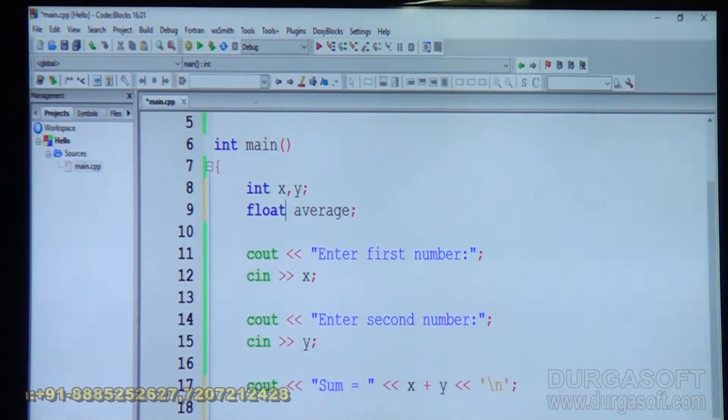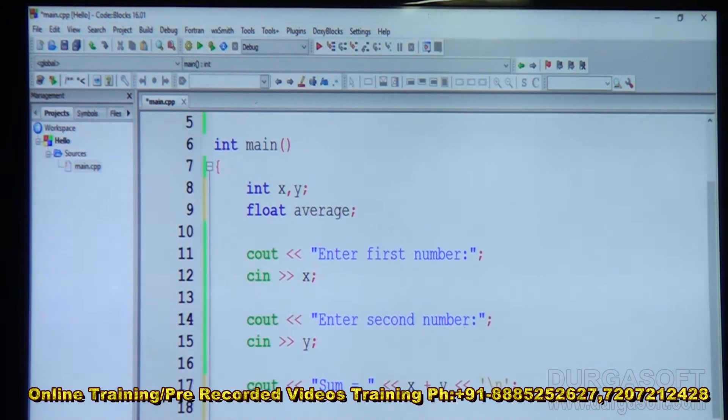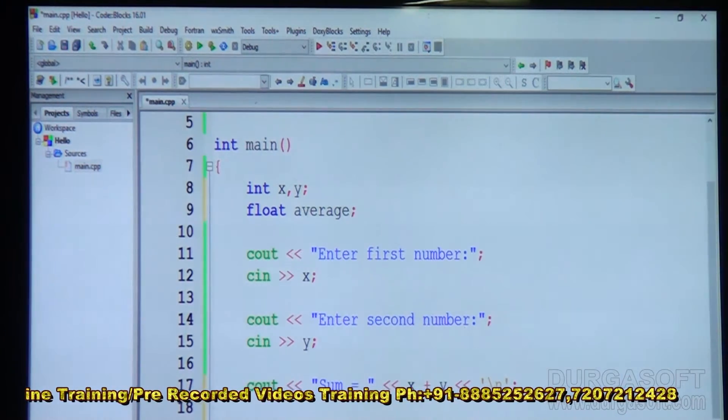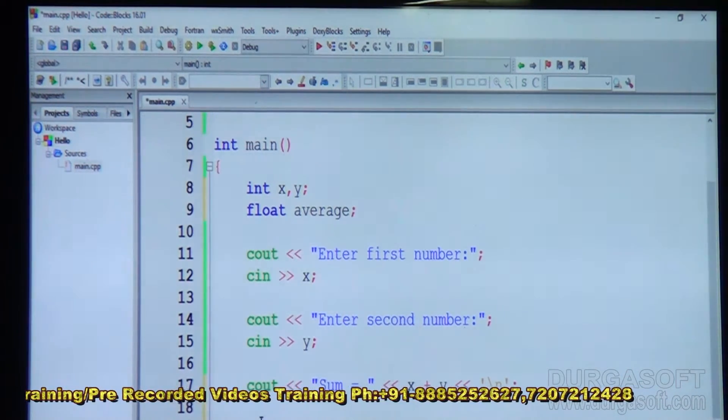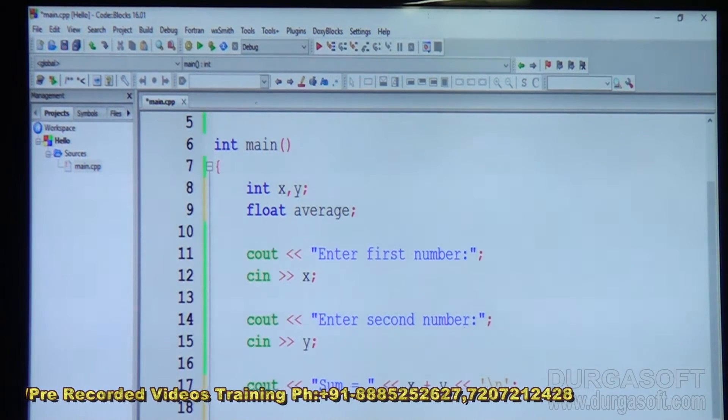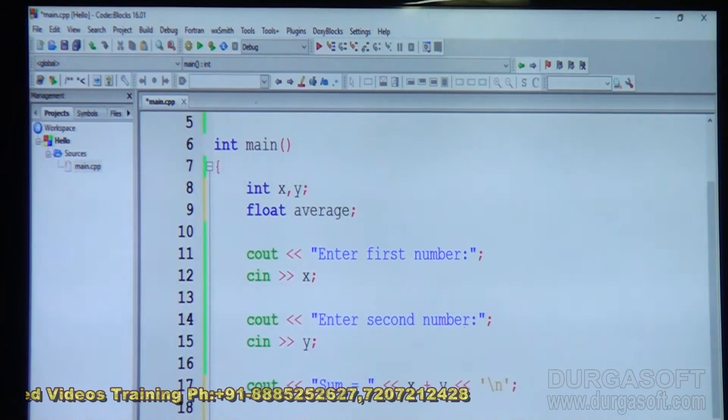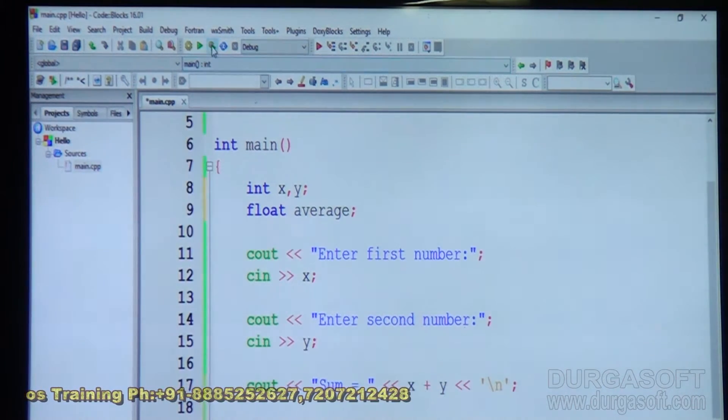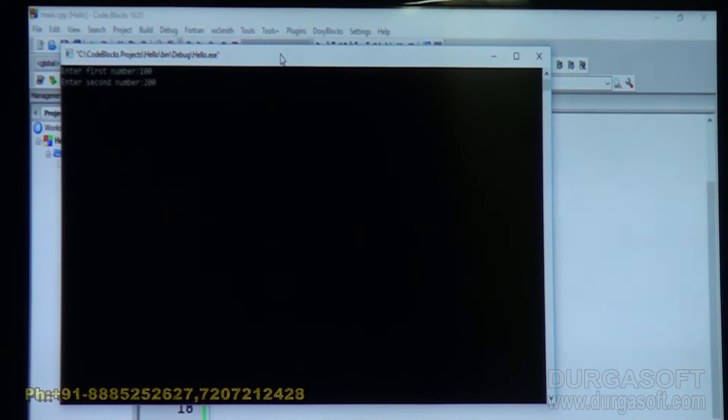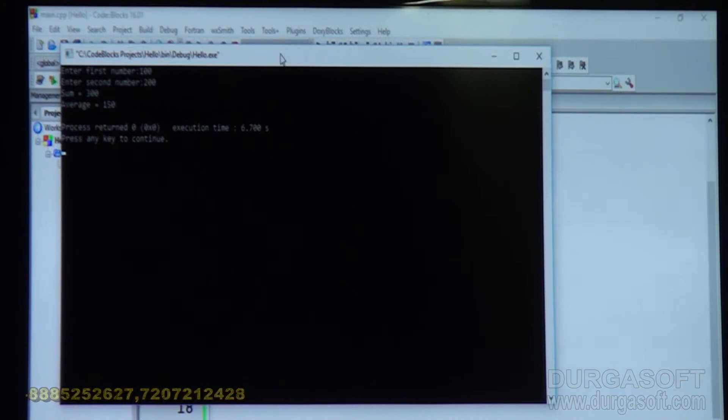So in fact this is fine. And we will display here average. So we calculate average here and store it in average variable. Then cout average is equal to average run. Okay. First number 100. Second number 200. Sum is 300. Average is 150.